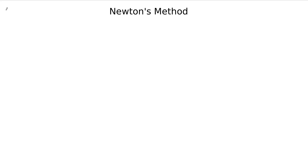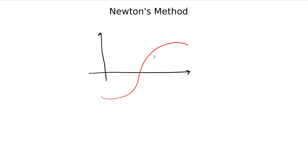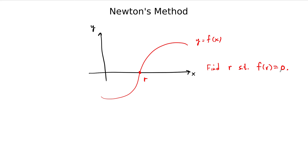Let's use a Maclaurin series to talk a little bit about Newton's method. From Calculus 1, the idea of Newton's method is you have some function y equals f of x, and this function has a root r — the function has a zero. Our goal is to find the value of r such that f of r equals zero. It's a root of the equation f of x equals zero, a zero of the function, an x-intercept of the graph.